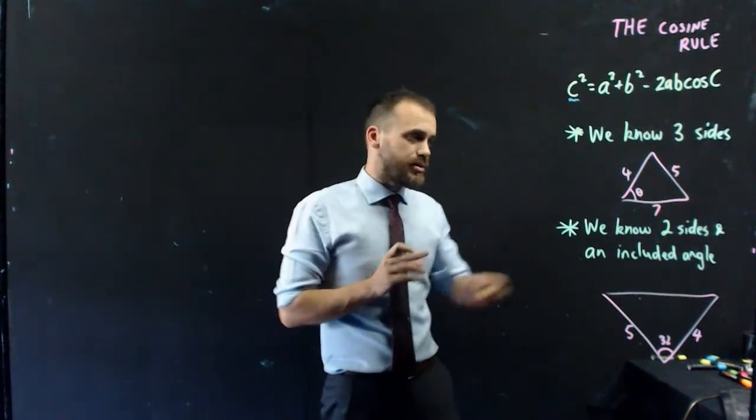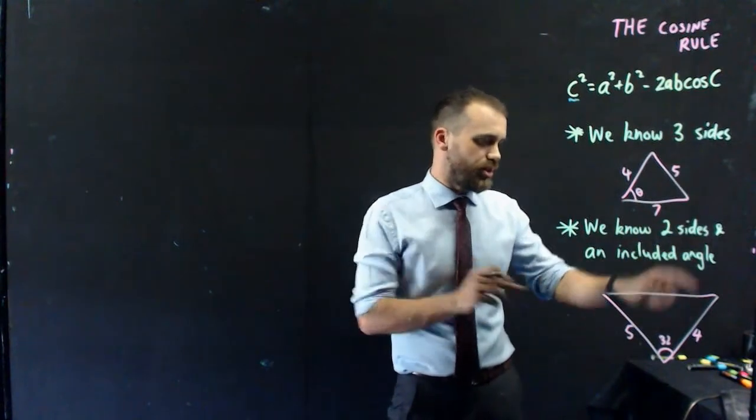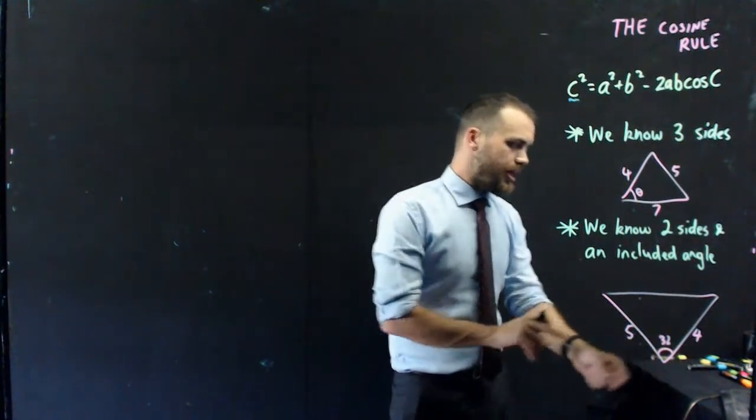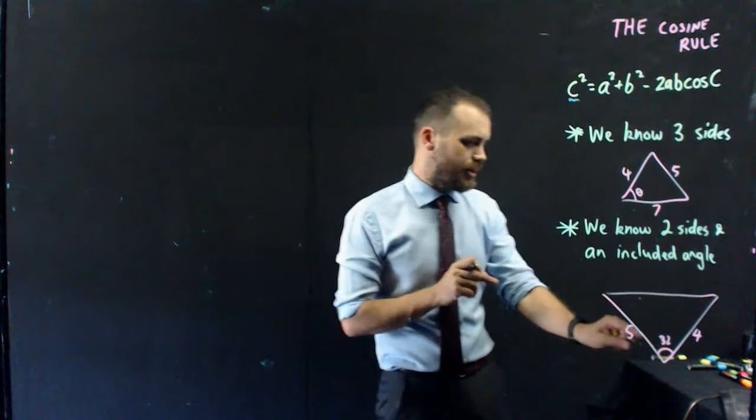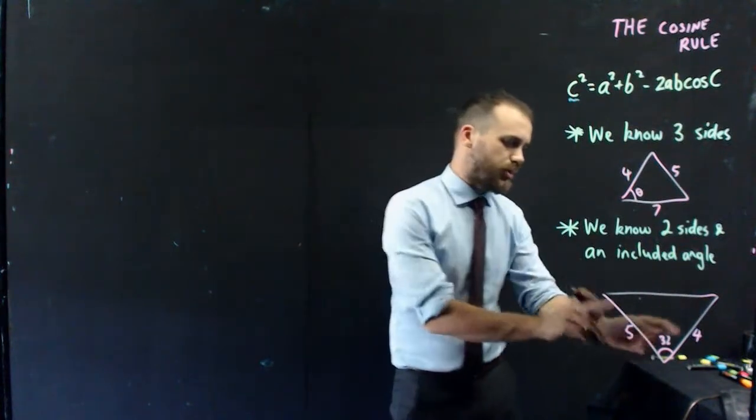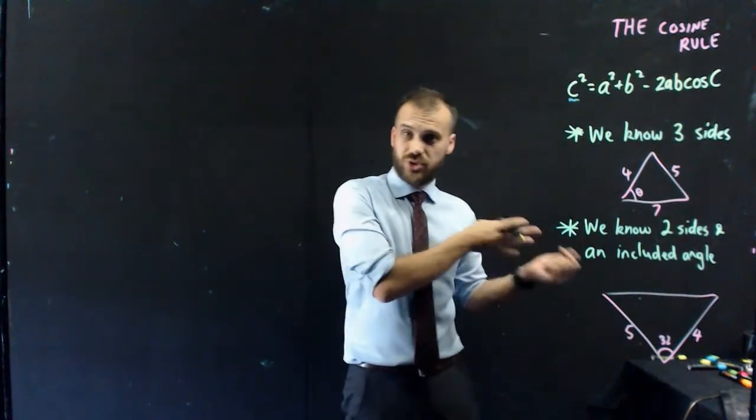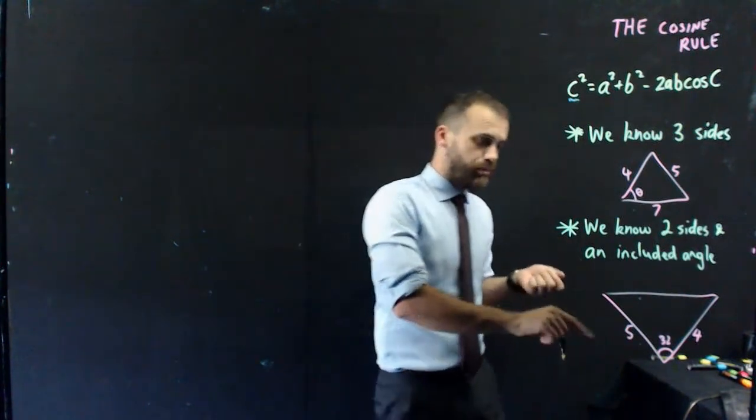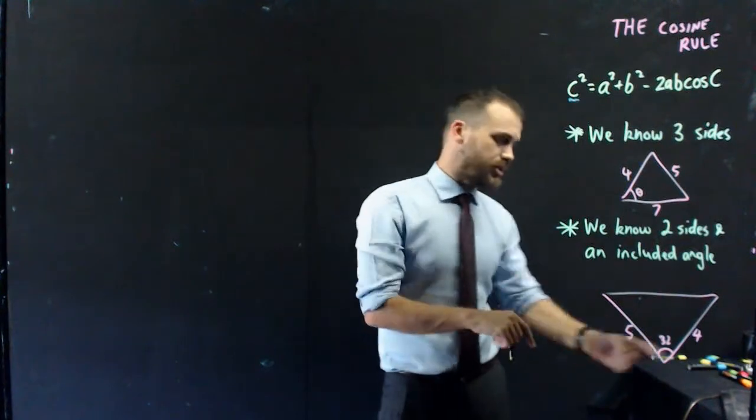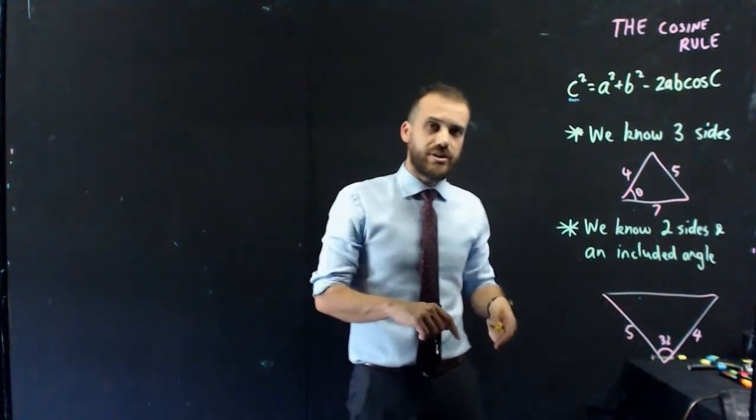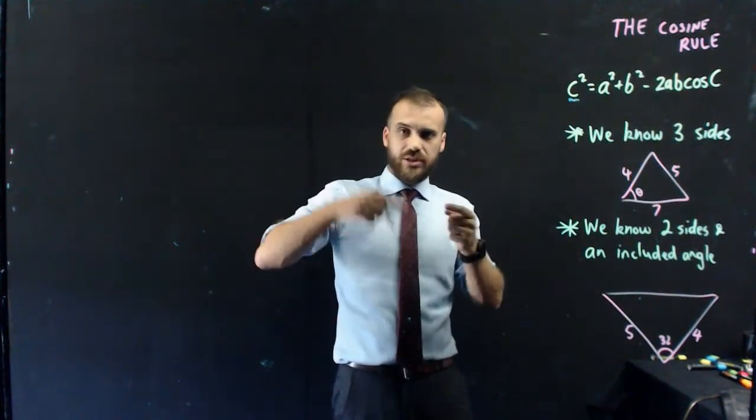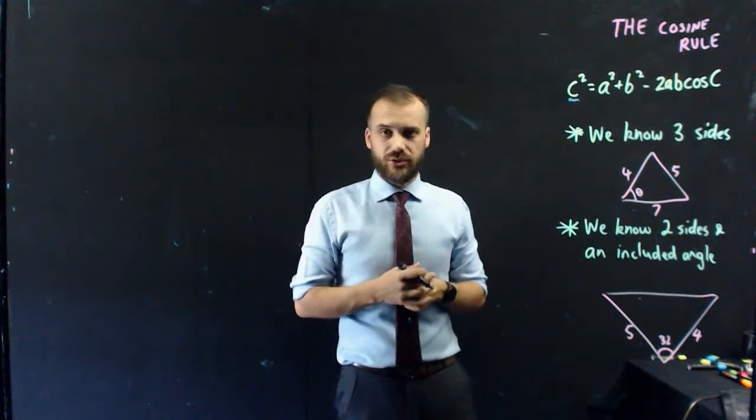The other instance is when you know two sides and the included angle. That means the angle between the two sides, where the two sides meet. Again, you can try putting them into sine rule, but this is side a, this is side b, and that's angle c. You don't know two of one letter, so you're not going to be able to find one side of the sine rule.